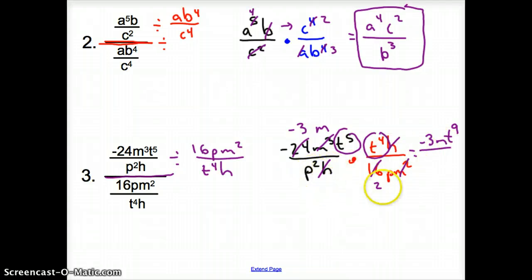We have a p squared and a p, so that's going to be a p cubed. And what else do we have left? We have this two left. So our final answer is negative three mt to the ninth, all over 2p cubed.